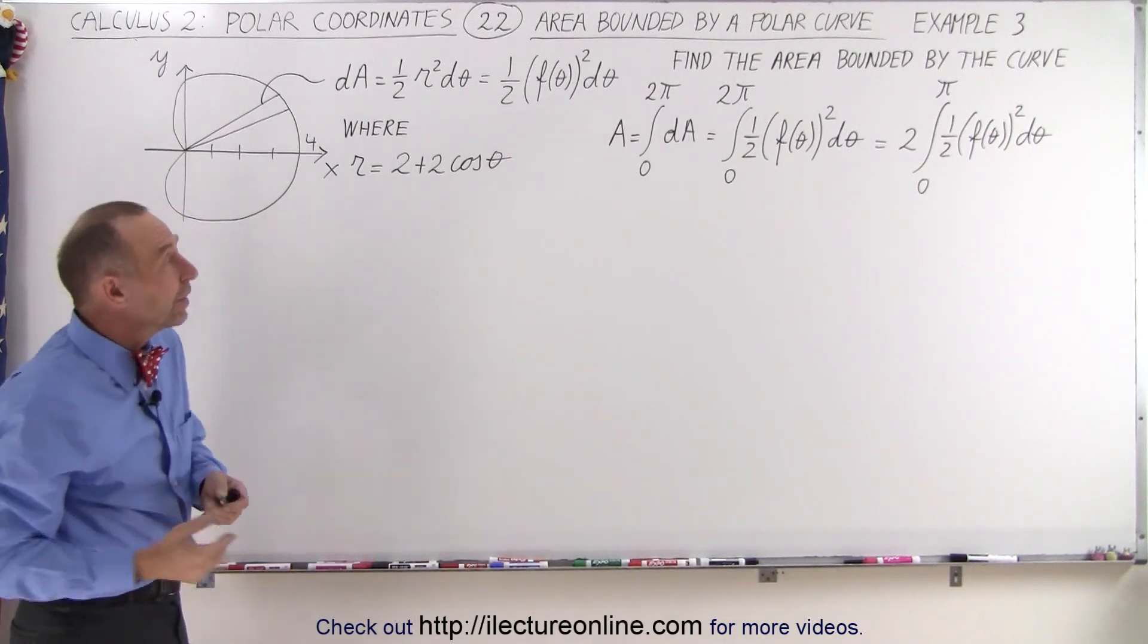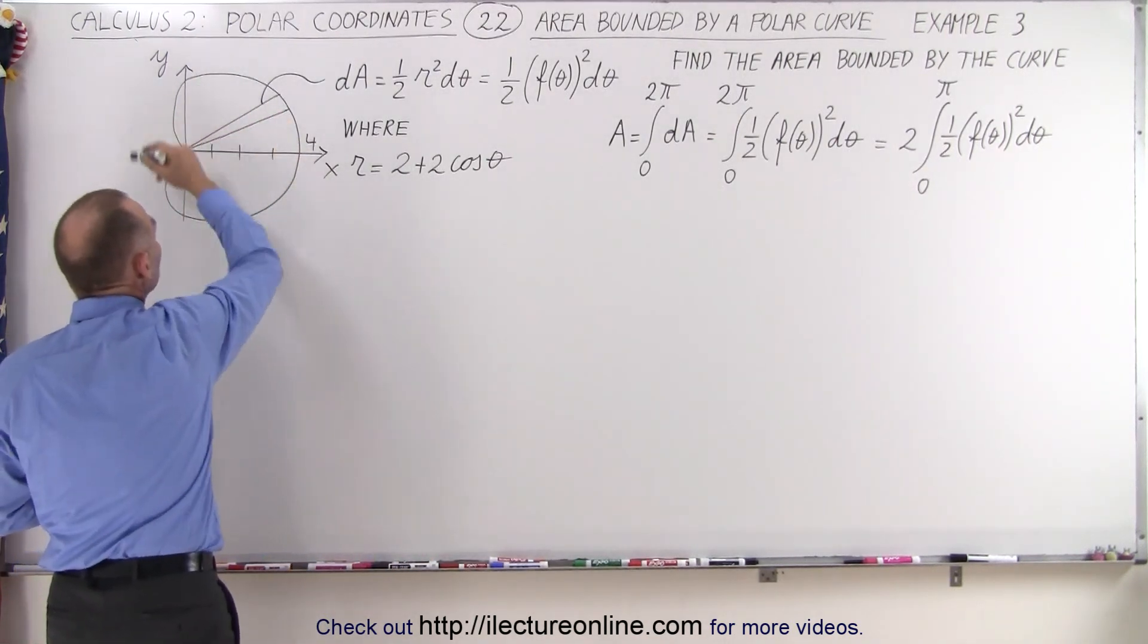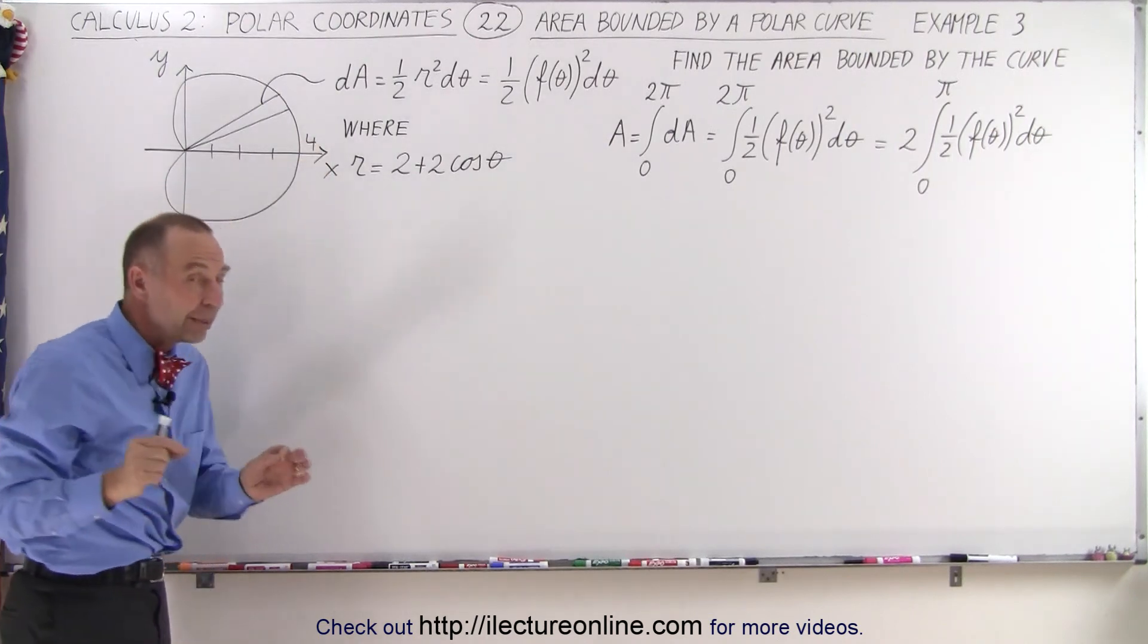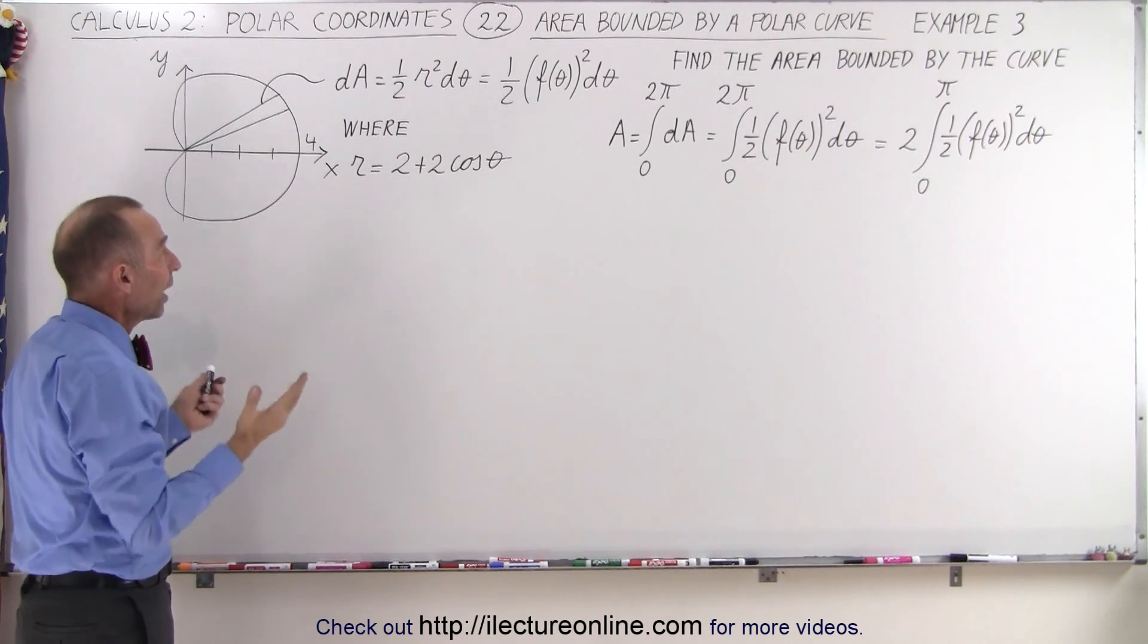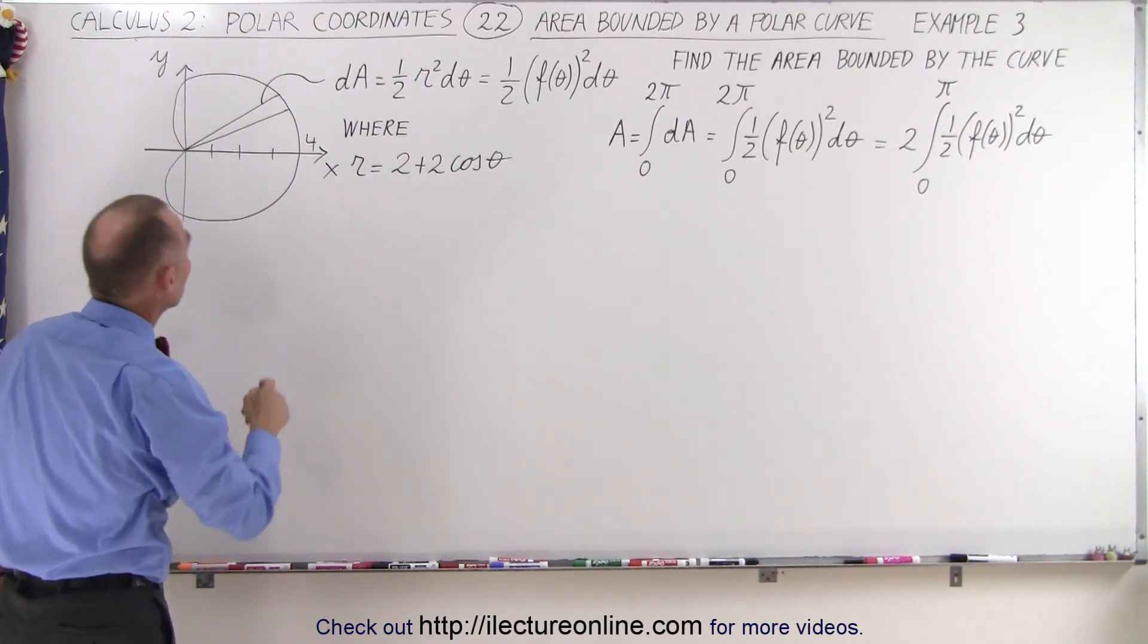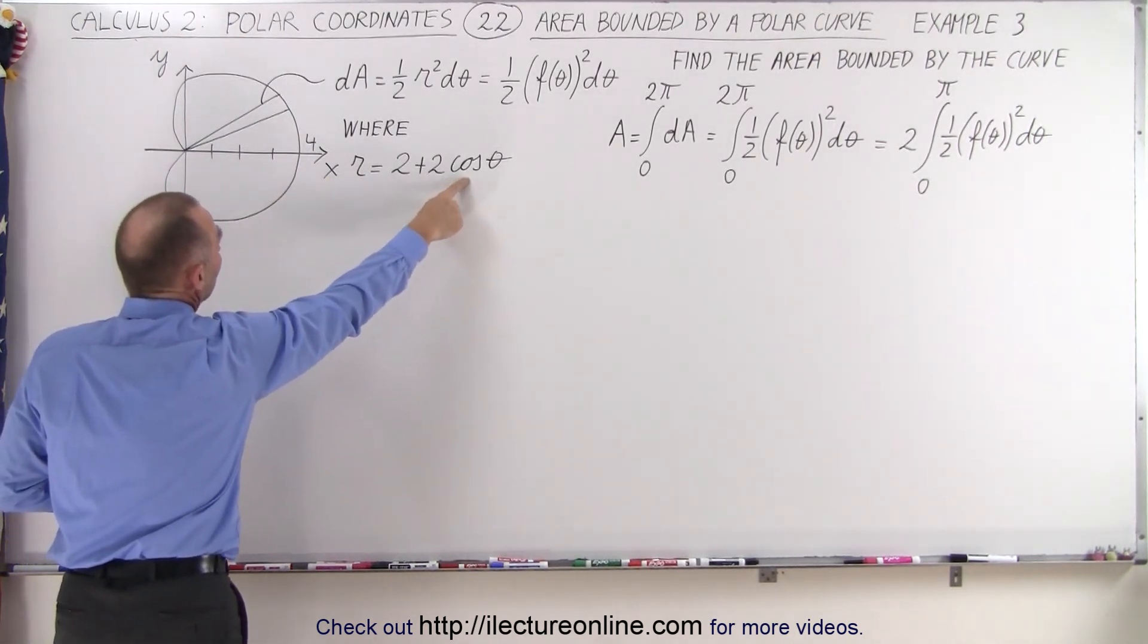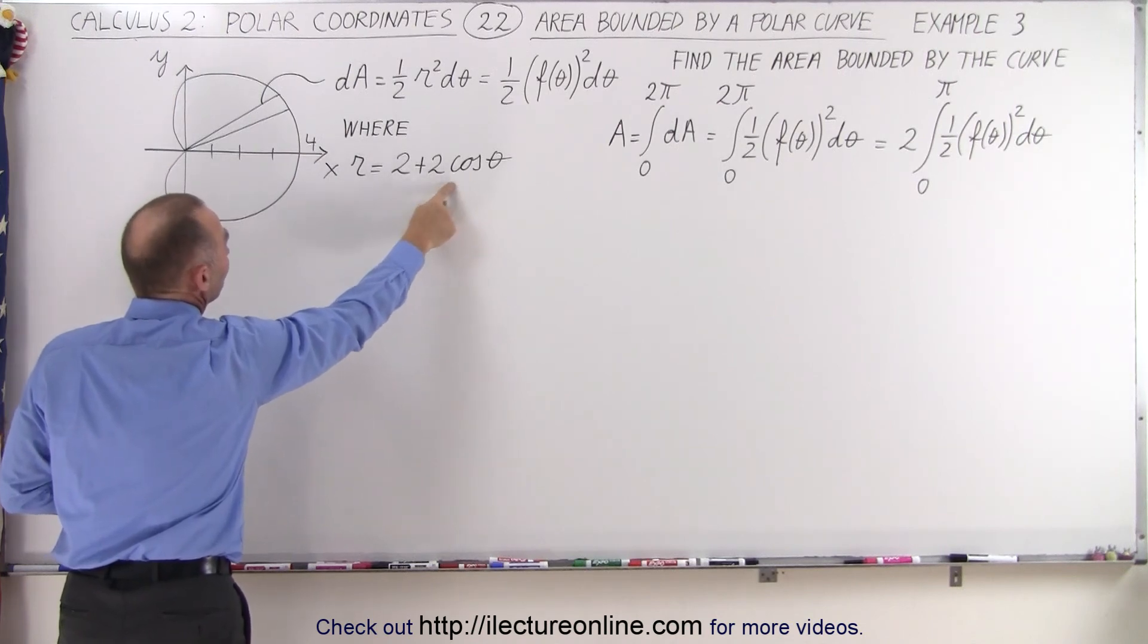And the limits of integration are going to go from 0 all the way to 2 pi going around. But you've got to be careful because sometimes the function repeats every pi. So how do we know which way it is this time? Well, notice that when the angle is 90 degrees or pi over 2, the cosine of pi over 2 is 0.